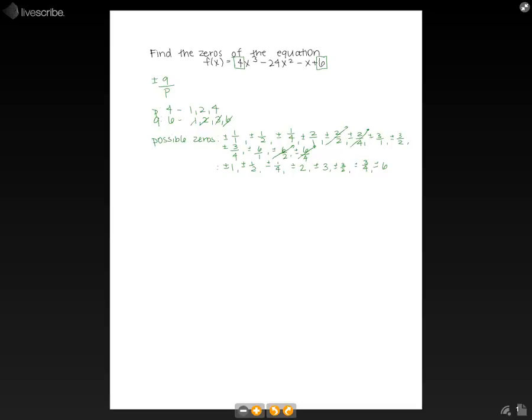So I like to use synthetic division to find the zeros. When we do synthetic division, you draw your bracket, and then you're going to use the coefficients from your equation. So we'll start with our largest x value, x³. So that will be 4 in front. Then we go down to x², which is -24, down to our x, which is -1, and then our constant, which is 6. Don't forget that if you have any values that were missing, so if we didn't have an x² term, instead of -24, we would need to put a zero in as a placeholder.